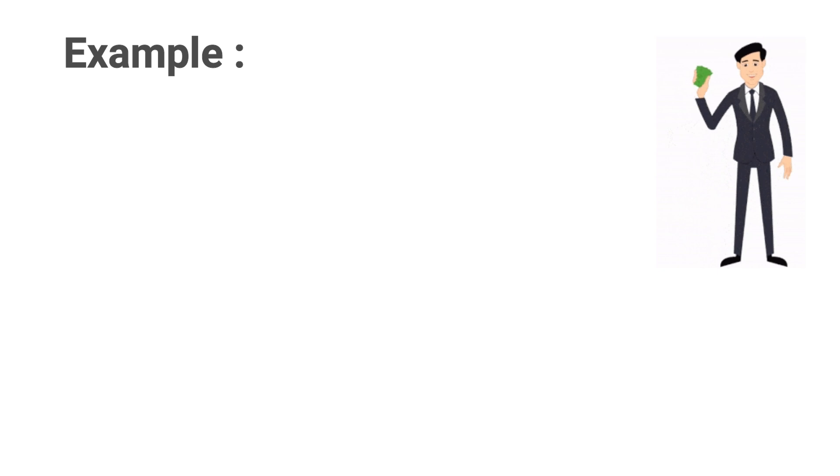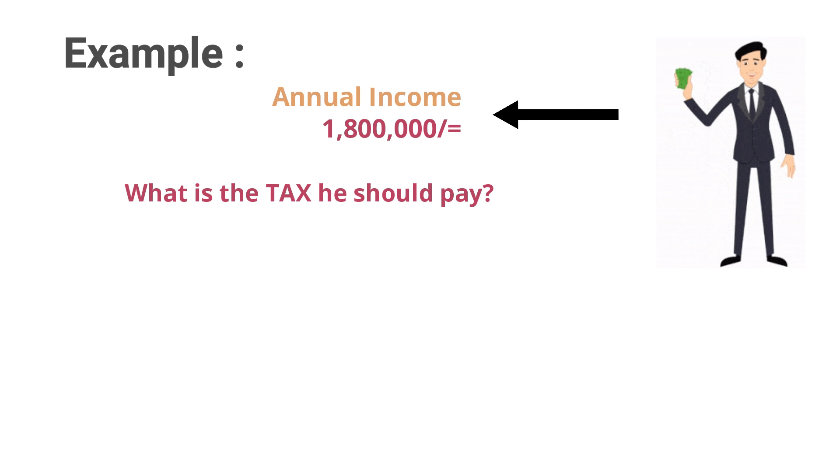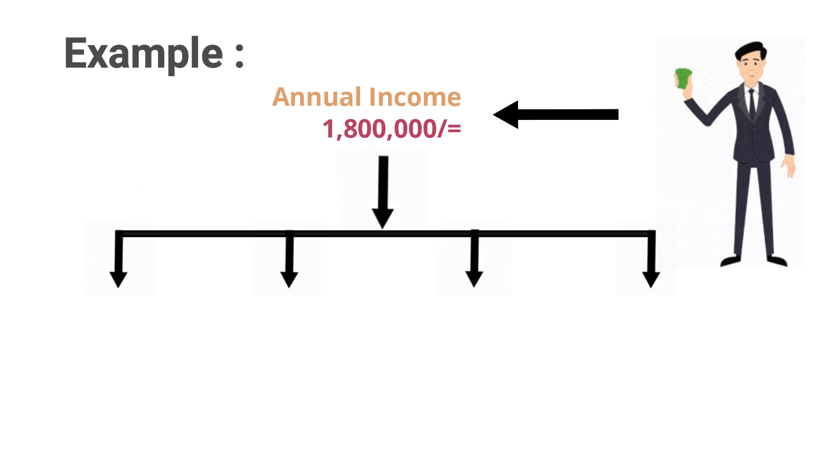Mr. Perera earns an annual income of 1 million 800,000 rupees. How much should he pay as the income tax? First we should split his income into portions of 500,000, because the table based on income tax imposes tax on 500,000 parts. So 1 million 800,000 can be separated into three 500,000 parts and a 300,000 part. The first 500,000 is tax free.